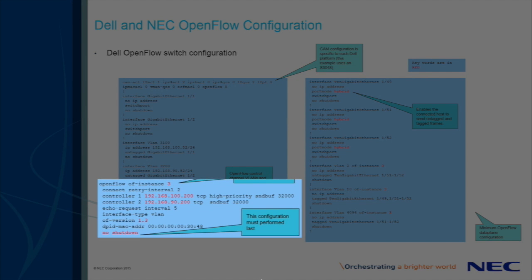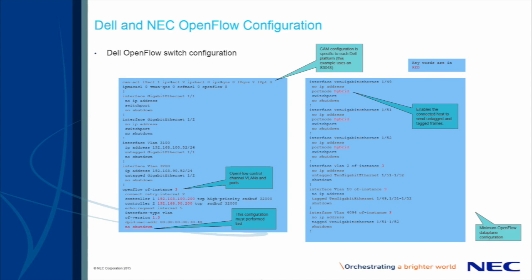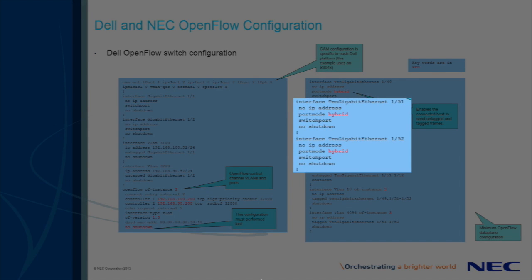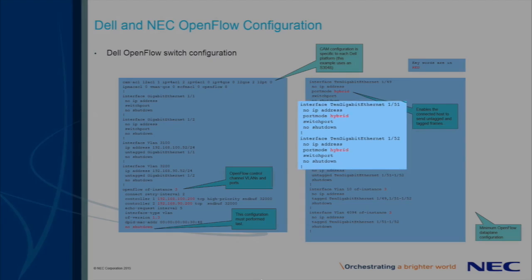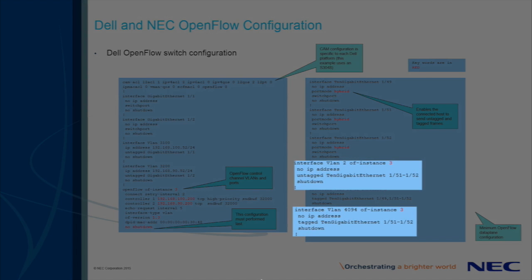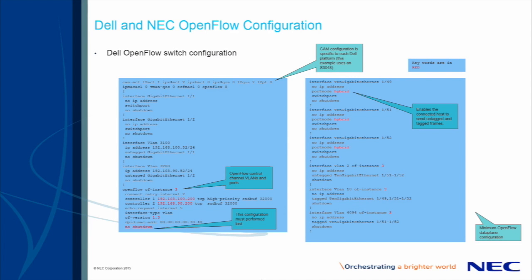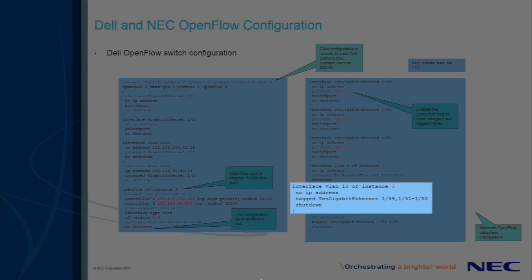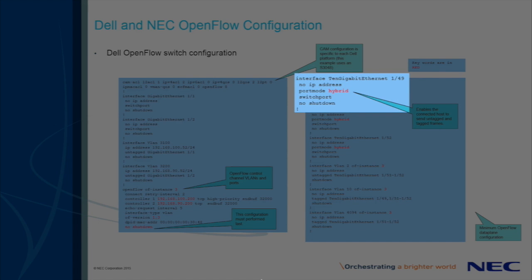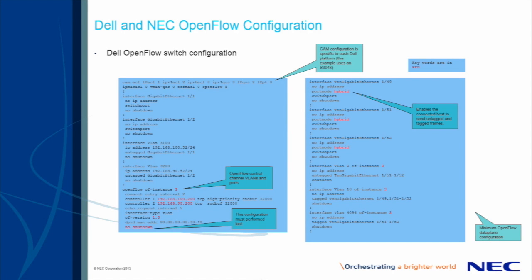Towards the bottom, we have the OpenFlow instance configuration. The controller IPs shown in this instance are floating IPs, or FIPs, that may failover between any CPFCs in a cluster for high availability. Moving to the configuration on the right, we are illustrating an example OpenFlow data plane. Notice that we have example inter-switch links, 10 Gigabit Ethernet 1.51 and 1.52, which connect to other OpenFlow switches. These are configured with OpenFlow untagged VLAN 2 and tagged VLAN 4094, which are required by the NEC controller for topology discovery and unicast flows. We also have an example data VLAN, VLAN 10, which may be used to carry customer traffic. Port 10 Gigabit Ethernet 1.49 may connect to a server or network device that transmits this traffic.